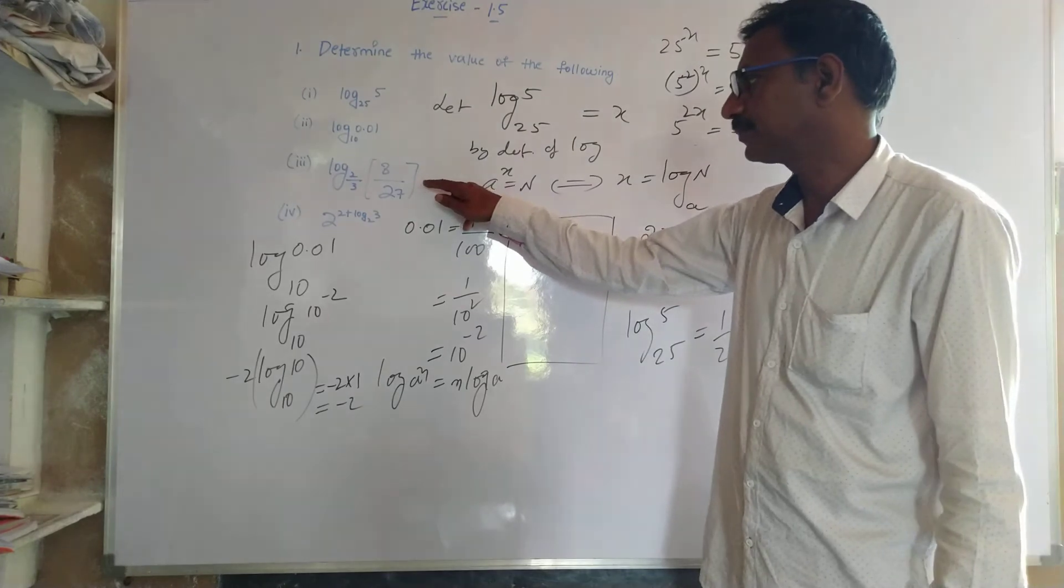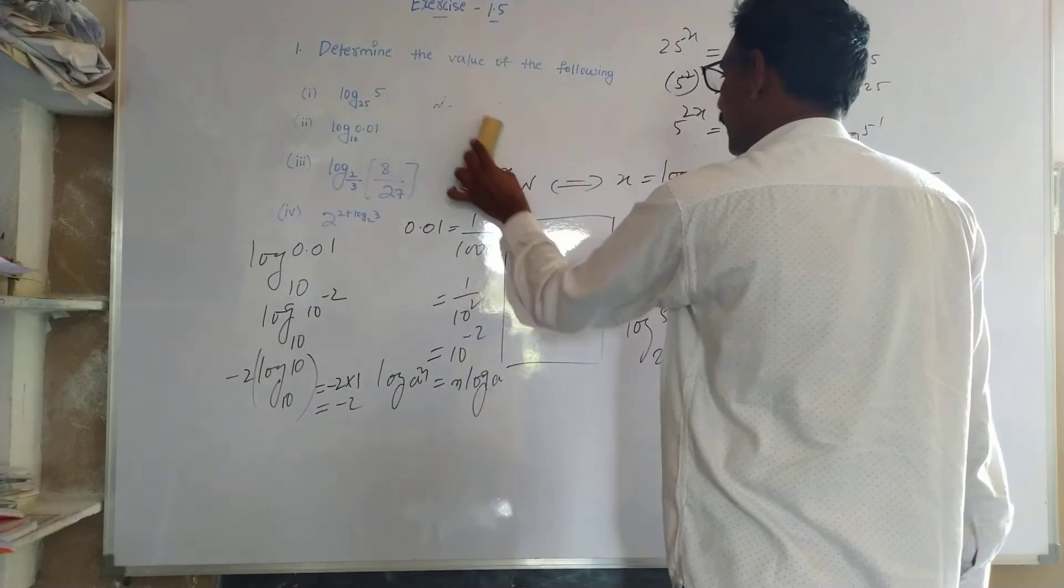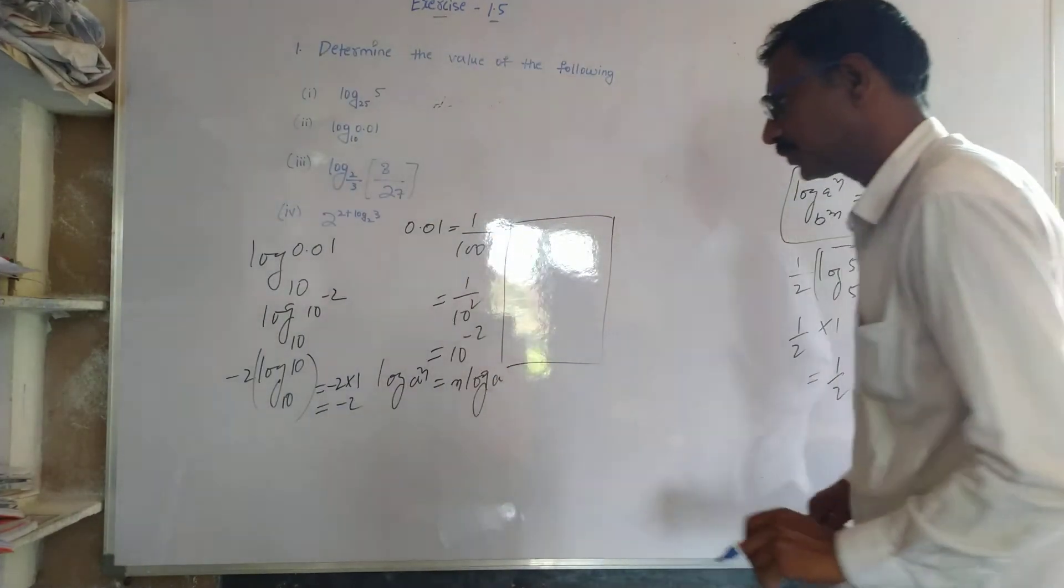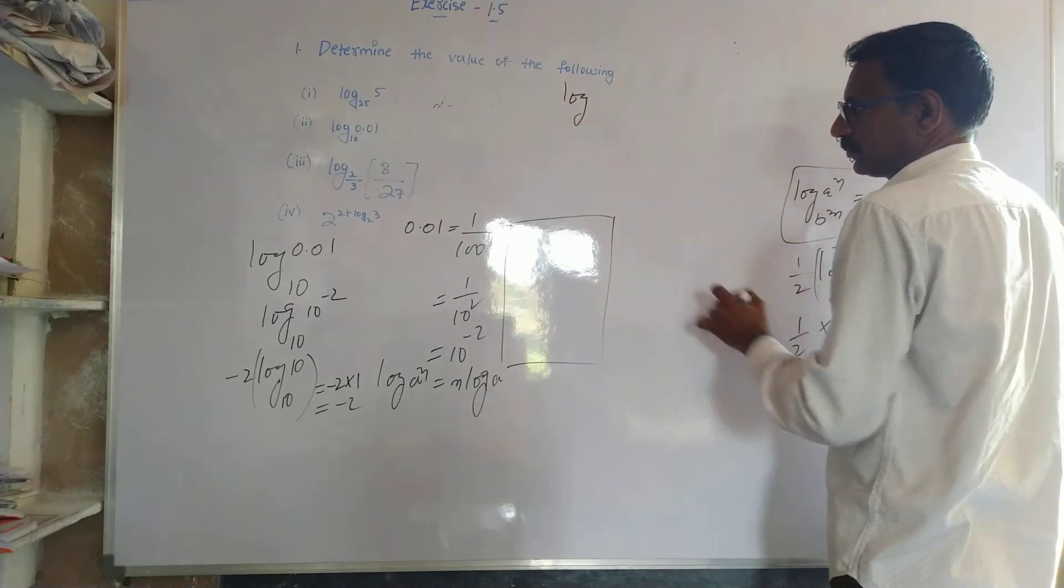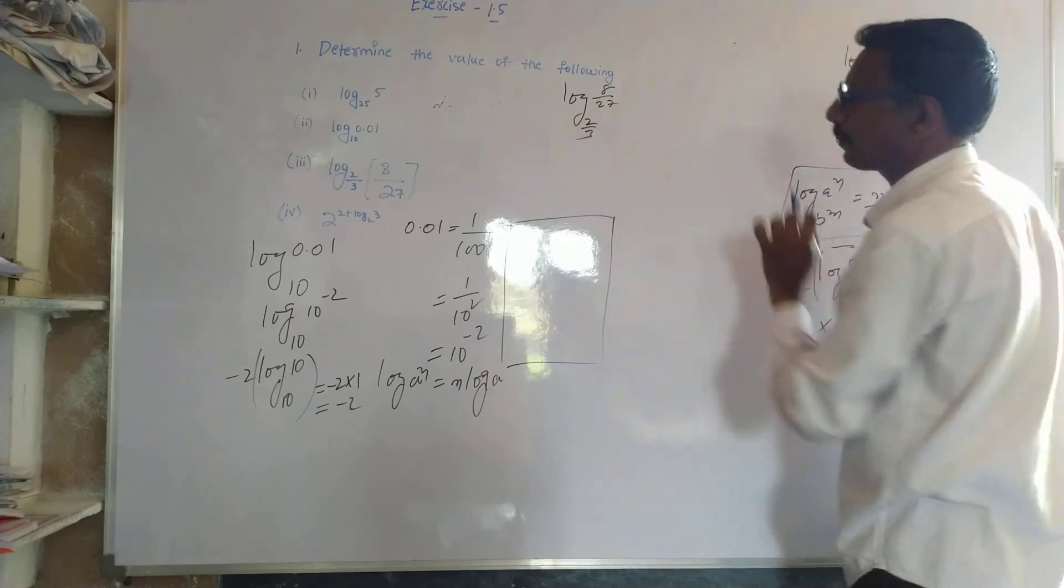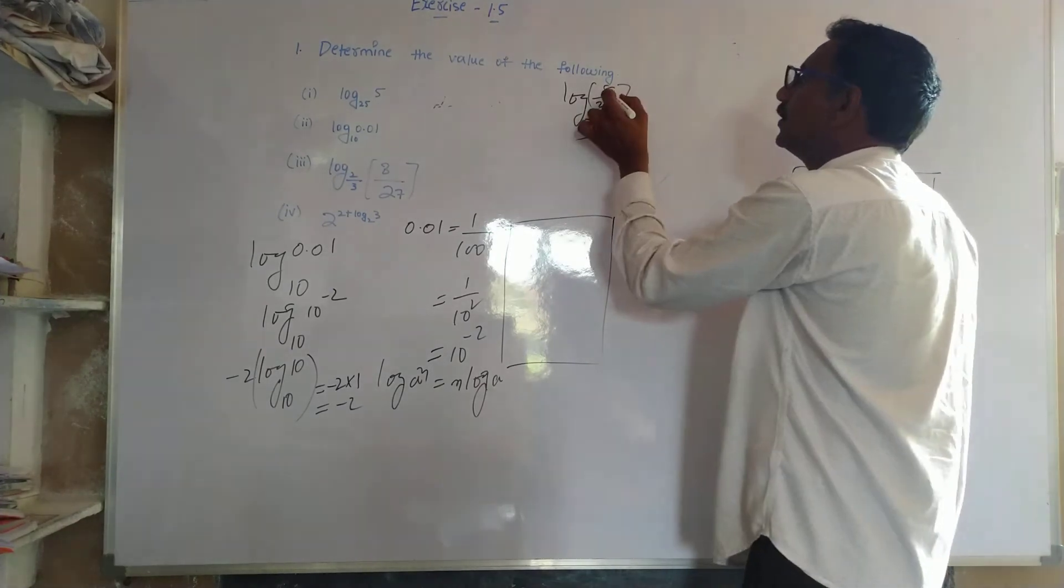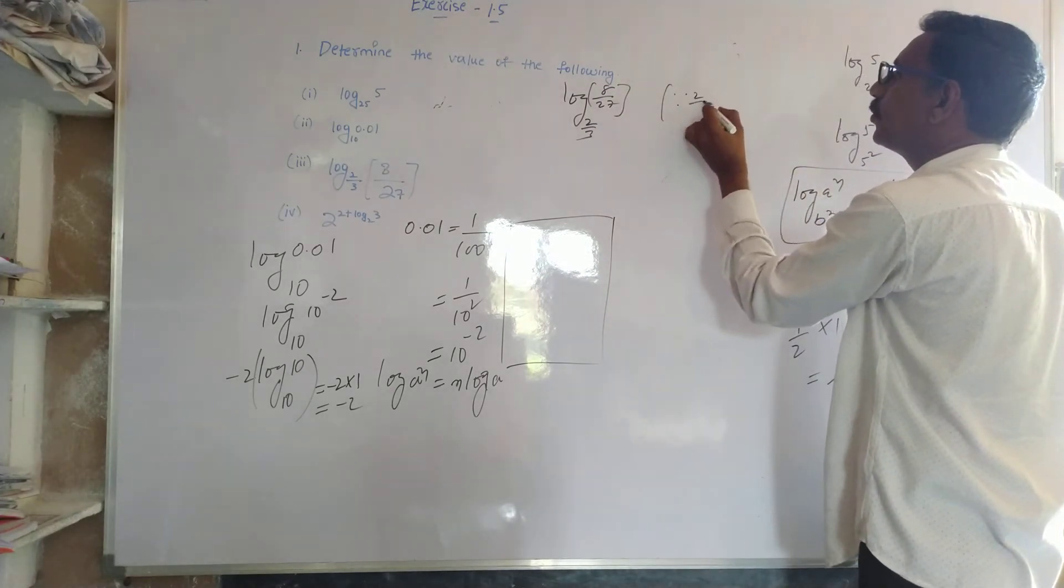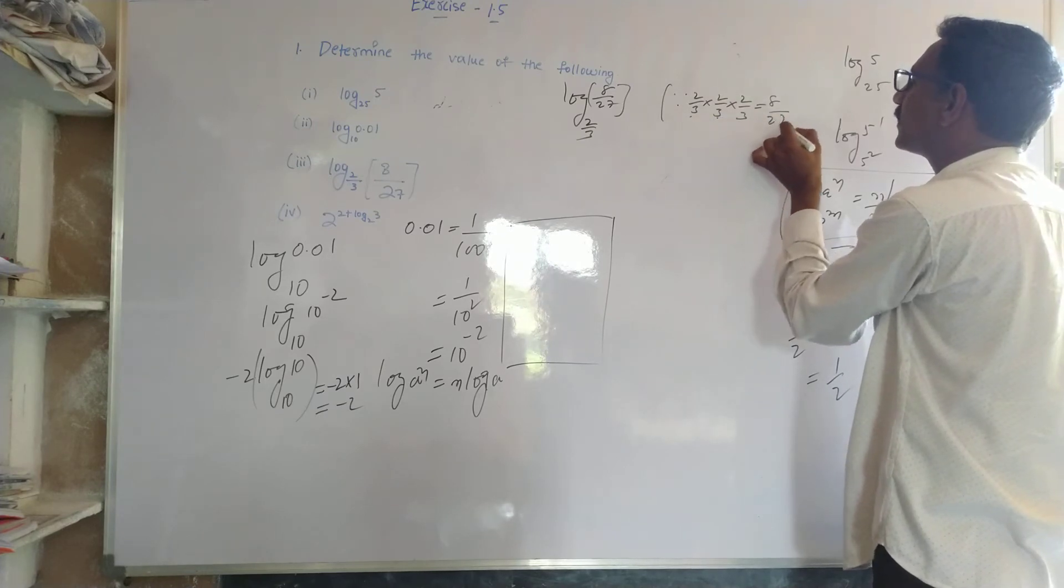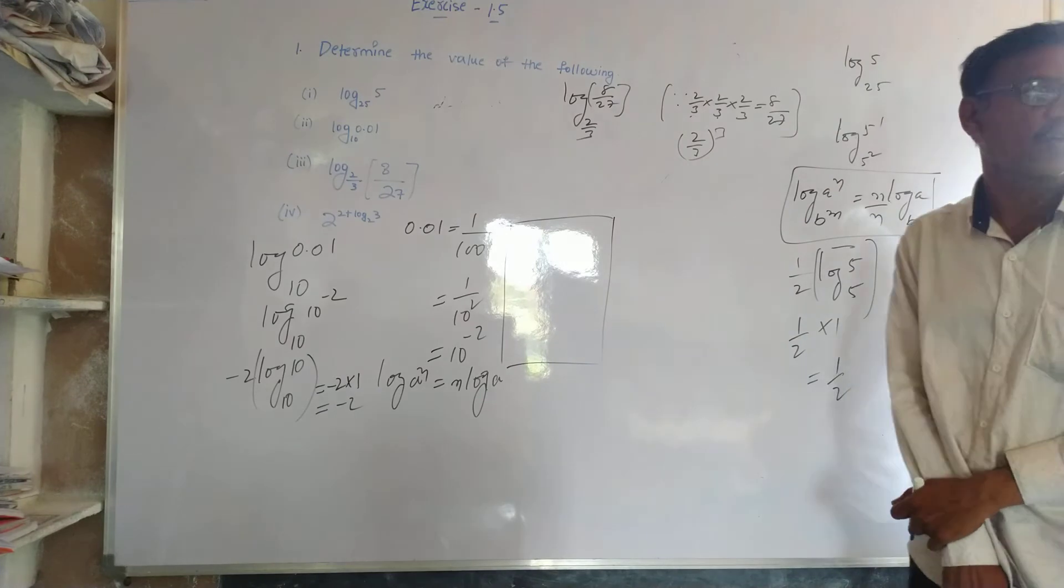Next one. How could you tell me? This is easier to do. Logarithm 8 by 27 to the base 2 by 3. Here 8 by 27, we write it as 2 by 3 into 2 by 3 into 2 by 3. 2 times 2 times 2 is 8, 3 times 3 times 3 is 27. So 2 by 3 old cube.